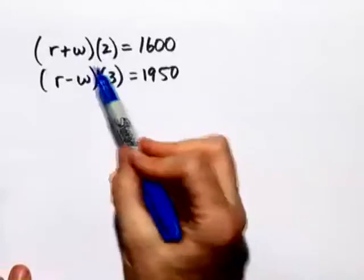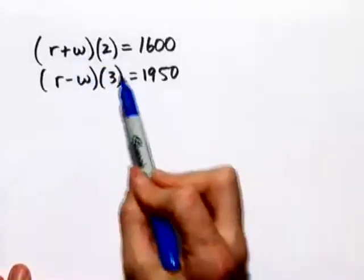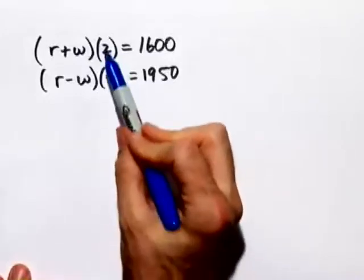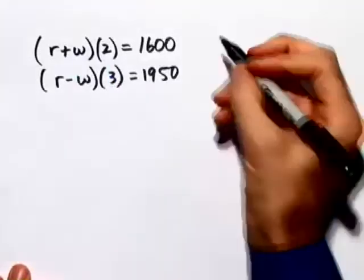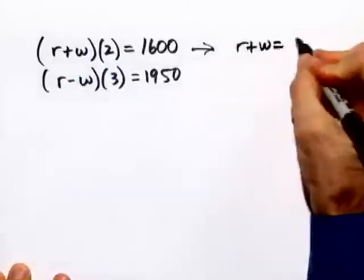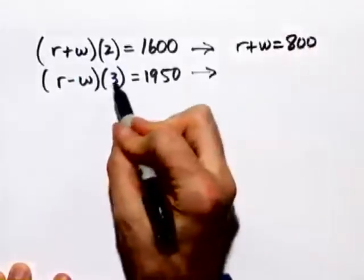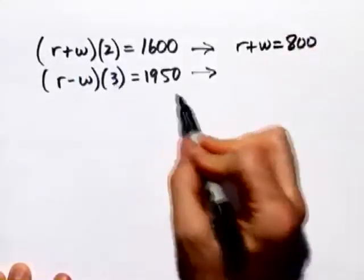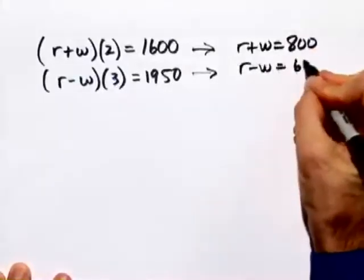Here we have the two equations we just derived. Now what we need to do is solve for r and w. The first thing we might want to do is get rid of these constants 2 and 3 that are factors of r and w. So if we divide both sides of the equation by 2, the first equation will become r plus w equals 800. If we divide both sides of the equation by 3, we'll cancel the 3 factor and 3 dividing into 1950 is 650. So we have r minus w equals 650.